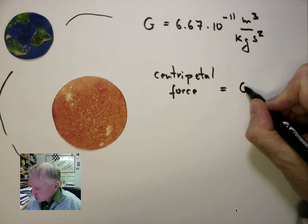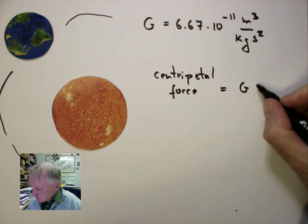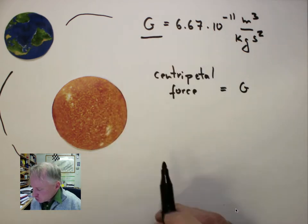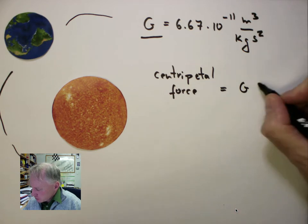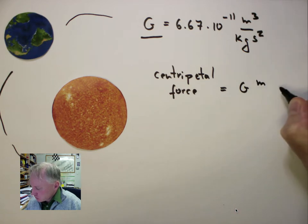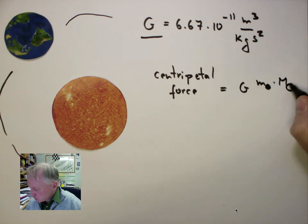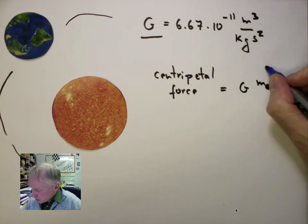Which, according to Newton, is equal to G, the Universal Gravitational Constant G, times the mass of the Earth, times the mass of the Sun. These symbols are the astronomical symbols for Earth.